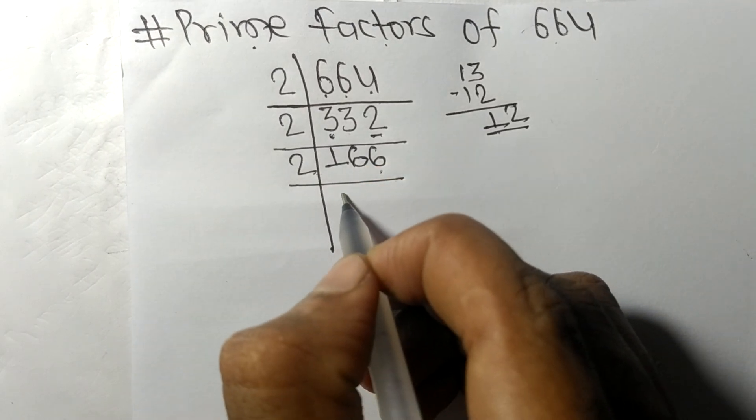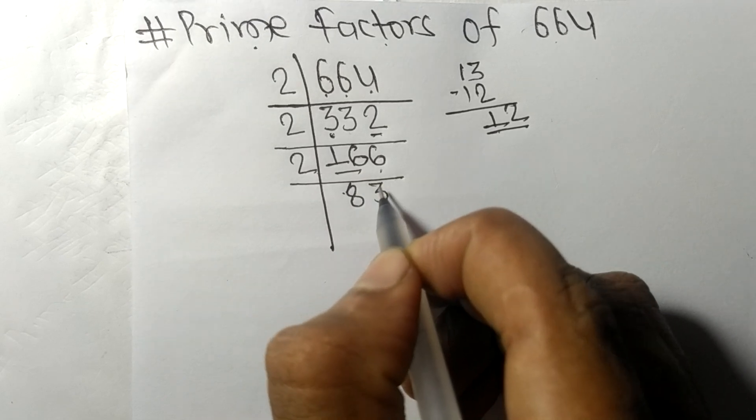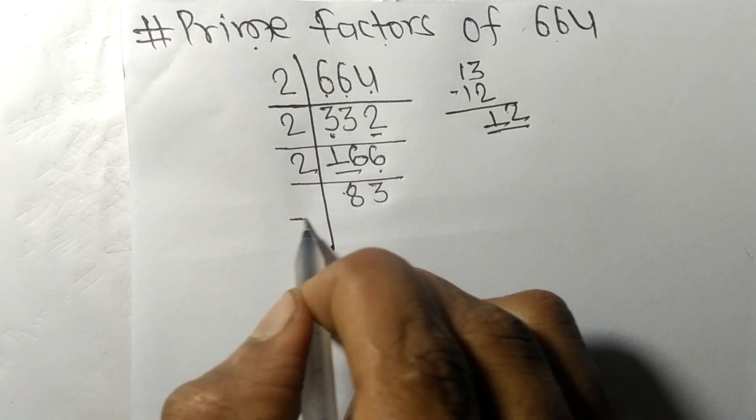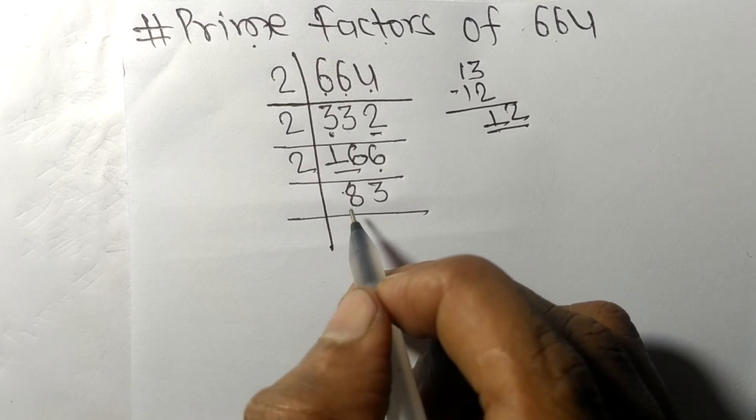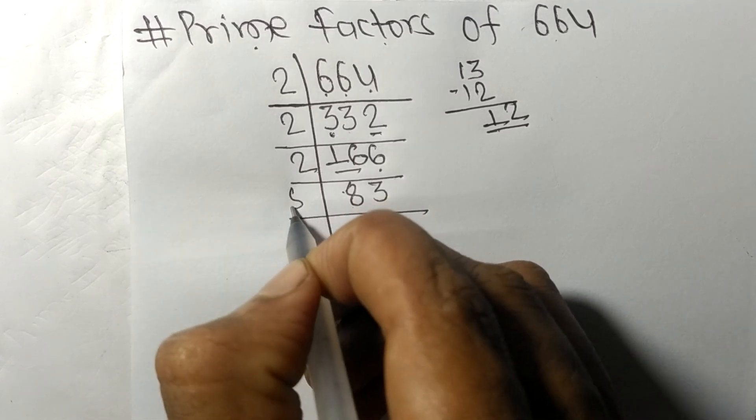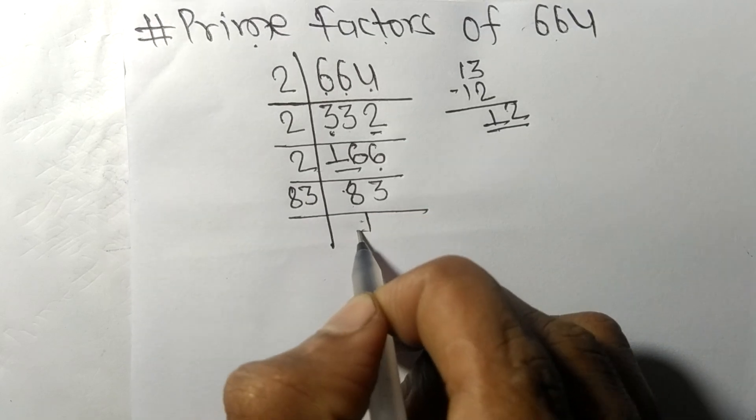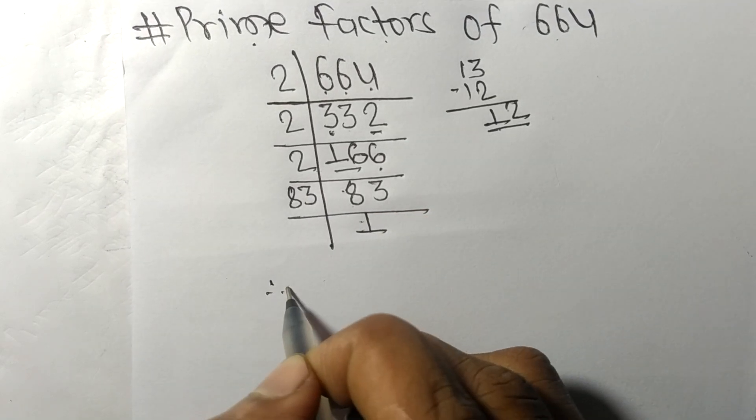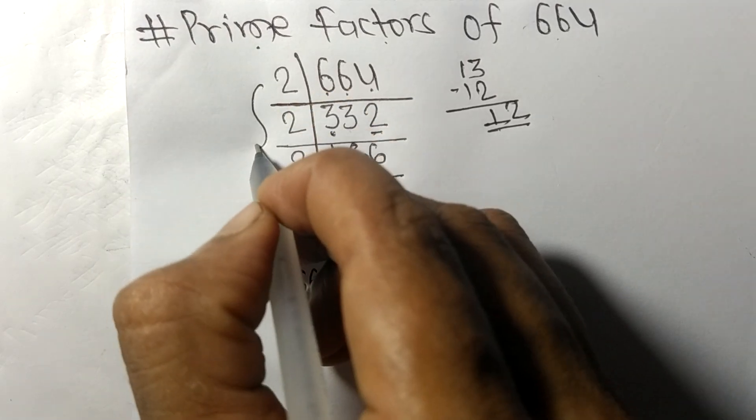2 times 8 equals 16, 2 times 3 equals 6. Now we get 83, which is a prime number, so it's only divisible by 83 itself, giving us 1. Therefore, 664 equals...